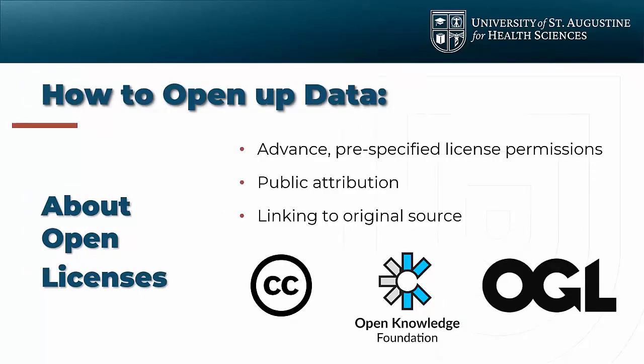Open licenses really boil down to placing some sort of indicator on the web page, on the data set, or on whatever document is released — giving some sort of advanced, pre-specified license permission that tells the user whether they're allowed to share it, repurpose it, adapt it, or modify it in any way, and essentially what you're allowing them to do with that data. These licenses typically encourage people to reuse and repurpose data under the most open CC BY Creative Commons licenses.